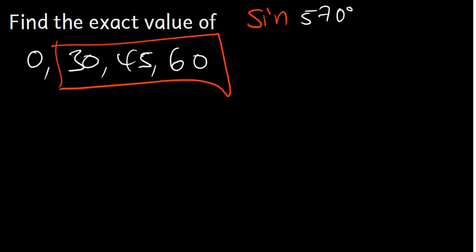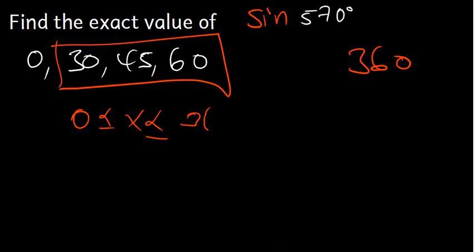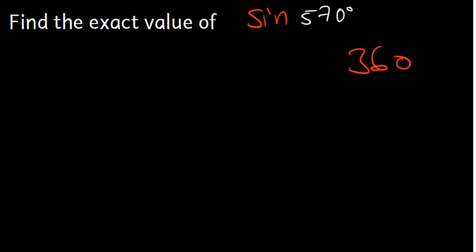Whenever you have been given an angle which is greater than 360, we know that angles are supposed to be in the range 0 ≤ x ≤ 360. Whenever the angle is greater than 360, you have to subtract 360 until the angle falls in that range.